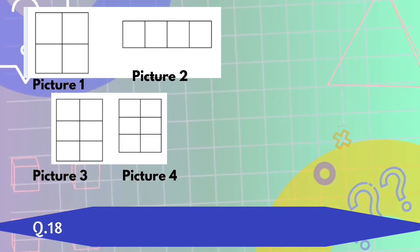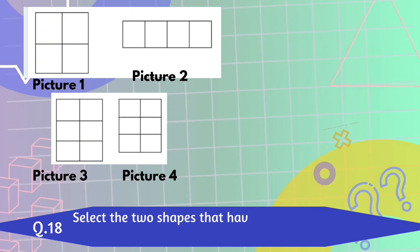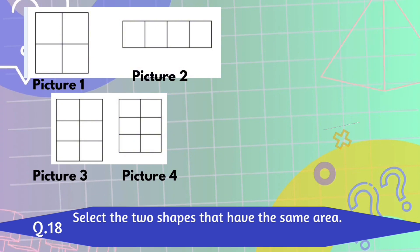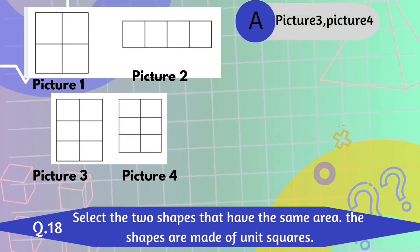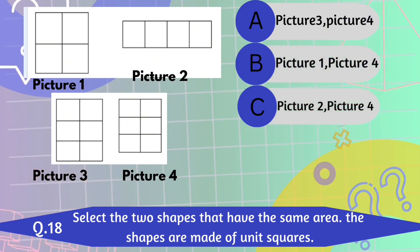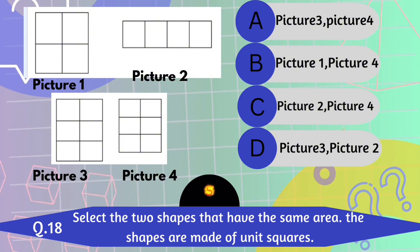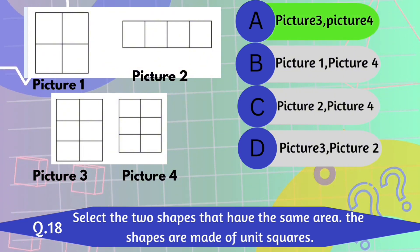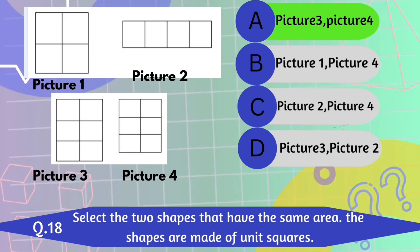Question number 18. Select the two shapes that have the same area. The shapes are made of unique squares. A. Picture 3 and Picture 4. B. Picture 1 and Picture 4. C. Picture 2 and Picture 4. D. Picture 3 and Picture 2. Picture 3 and Picture 4 is the correct answer.